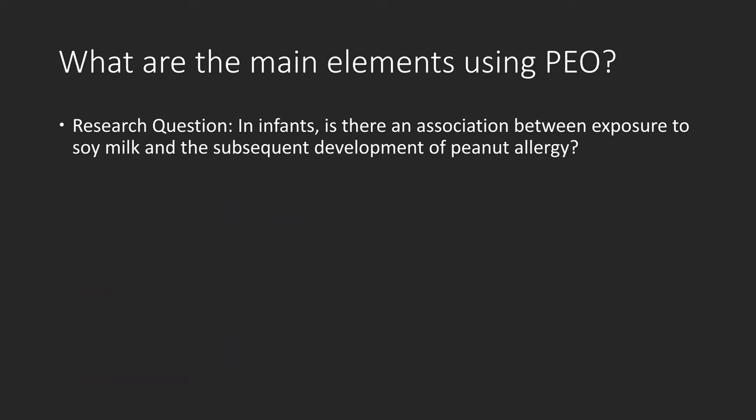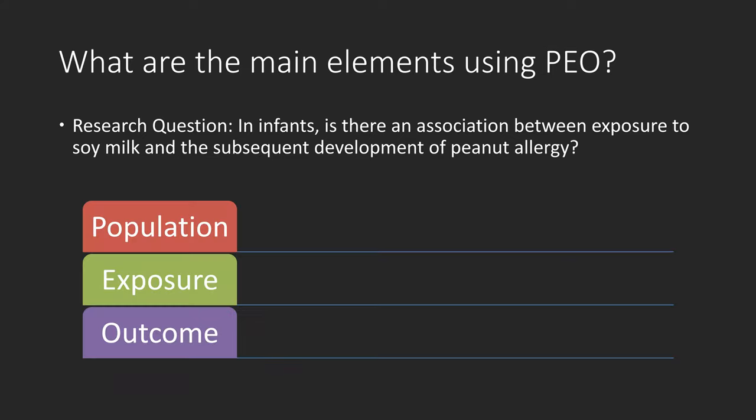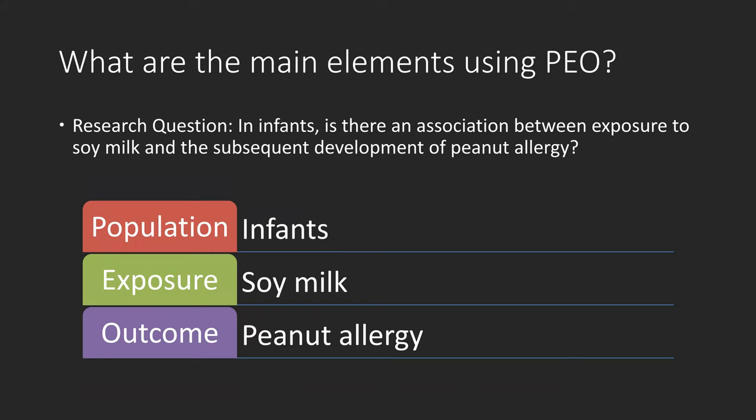Let's look at another example using PEO. In infants, is there an association between exposure to soy milk and subsequent development of peanut allergies? Population is infants; exposure is soy milk; and outcome is peanut allergy.